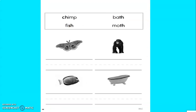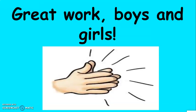Flip your paper. Now I want you to do the same thing. These four pictures are of moth, chimp, fish, and bath. Use your finger, match each word to the picture, and then I want you to write those four words from the word box on your piece of paper. Great work, boys and girls. Keep it up. I'm so proud of you. Woo-hoo!